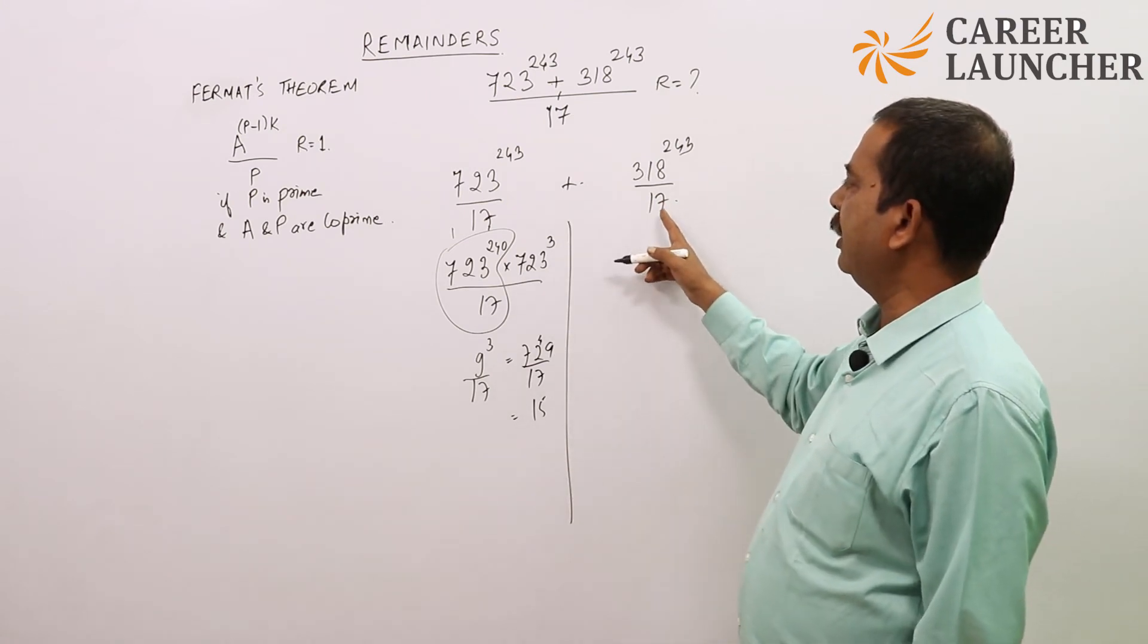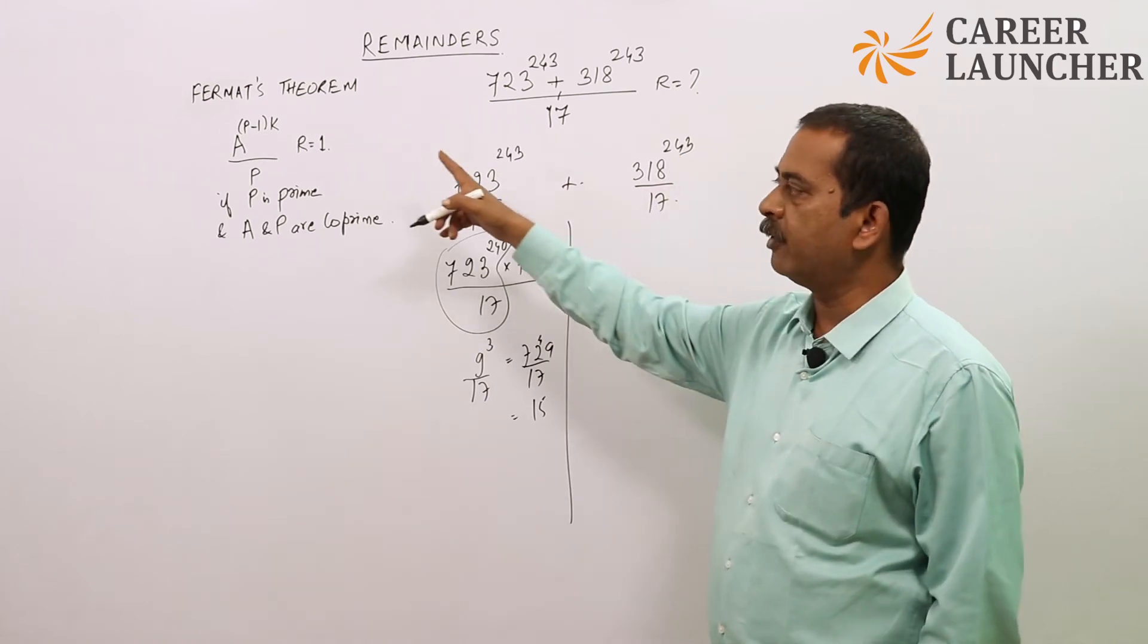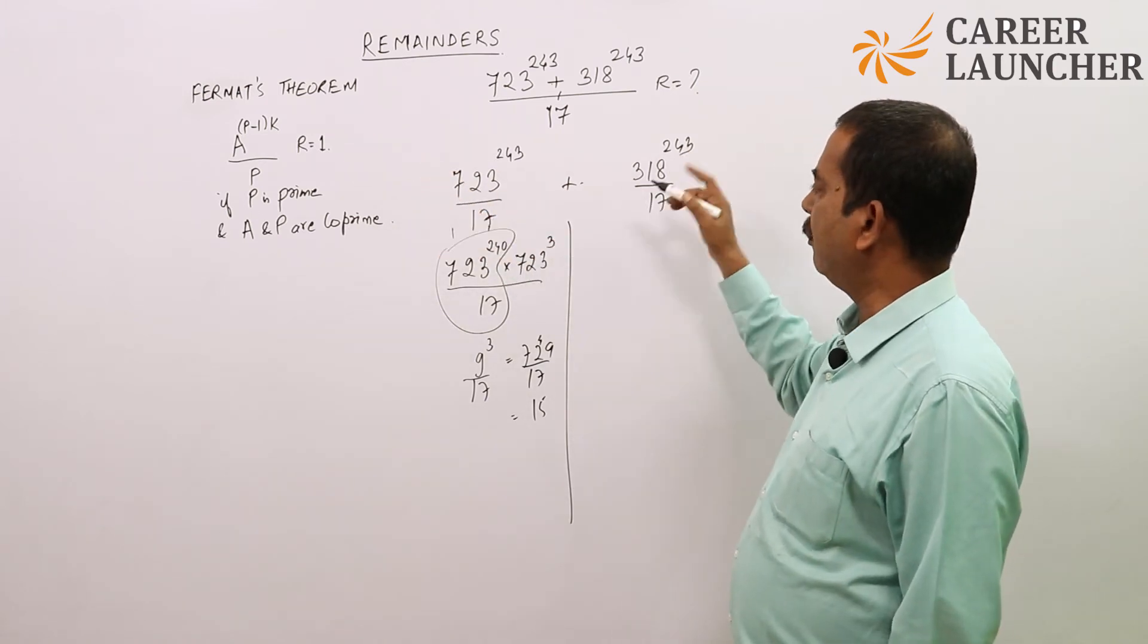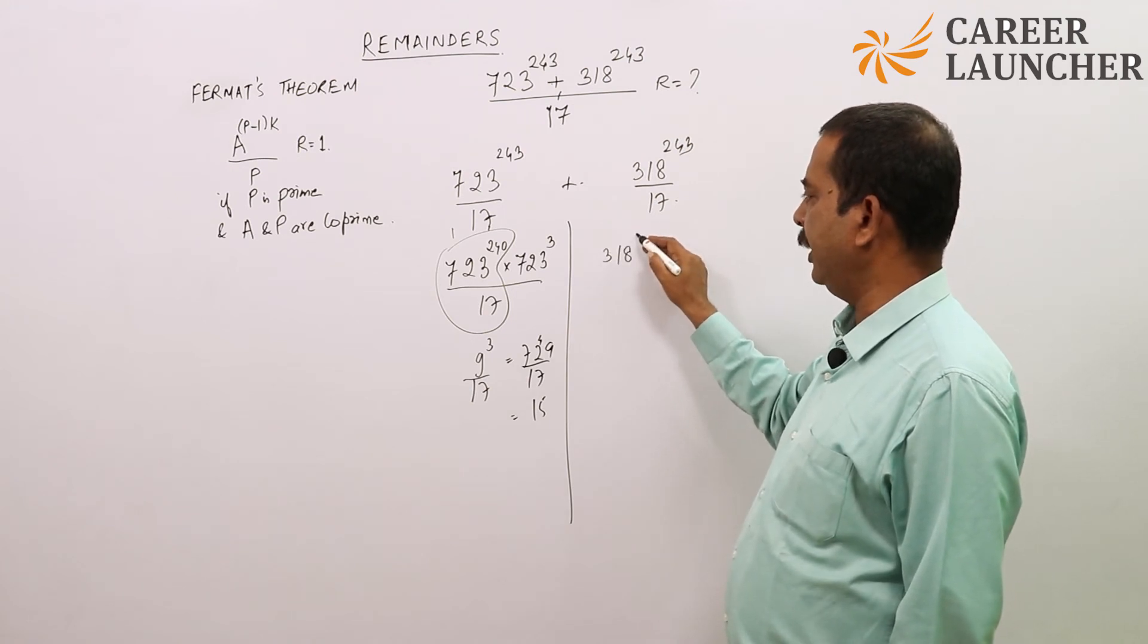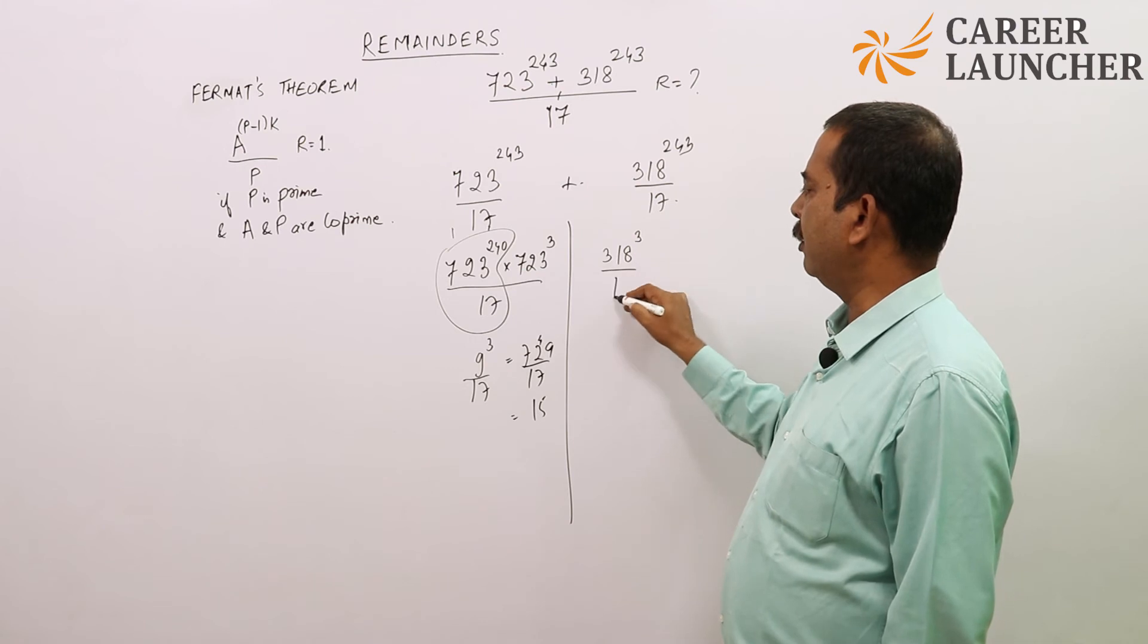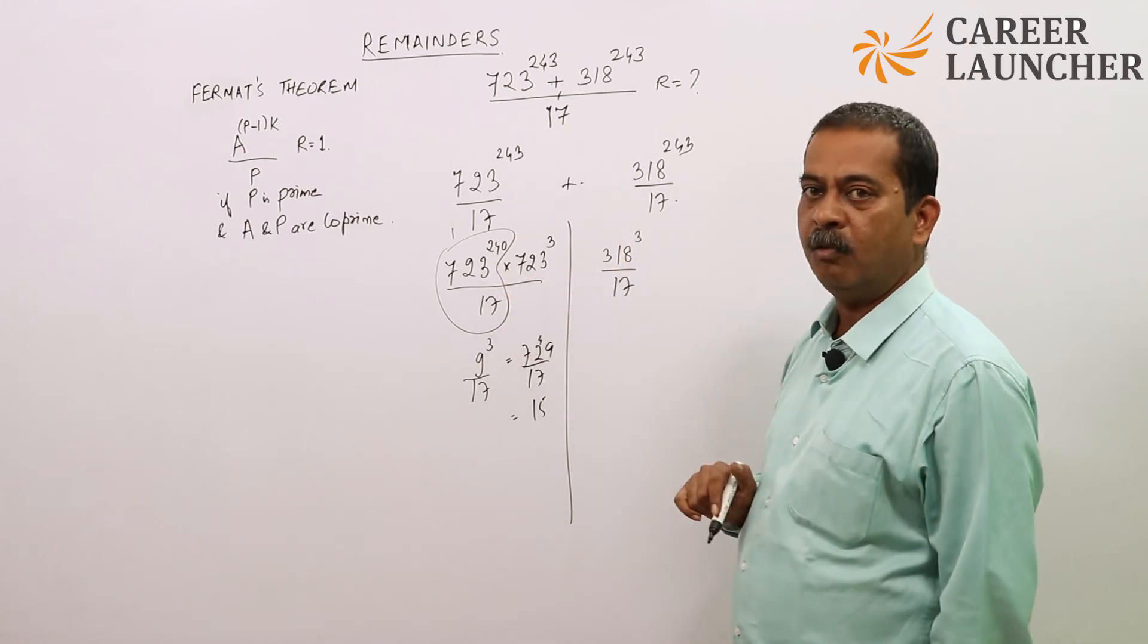Coming on to this side, when I divide 318 to the power 243 by 17, applying the Fermat theorem again the power gets reduced. Can I write this as 318 to the power 3 divided by 17, because the 240th power will give me remainder 1.